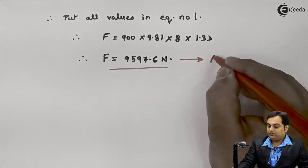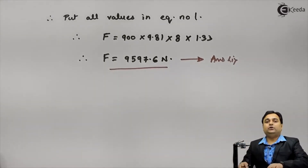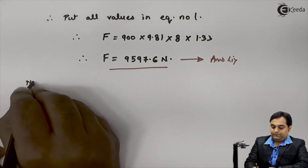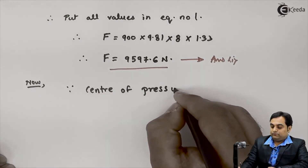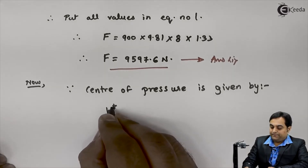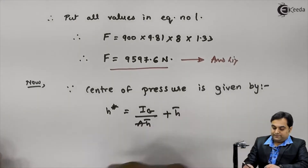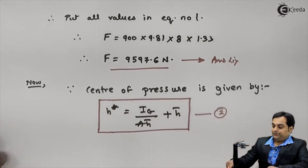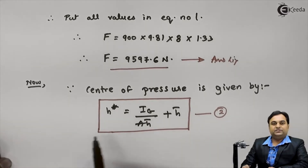After getting the hydrostatic force, I will find the point where it acts, which is called the center of pressure. The center of pressure is given by the formula: H star equals I_G divided by (A into h̄), plus h̄. This is equation number two. Here I_G is the moment of inertia of the triangular plate about its centroid.